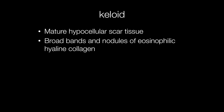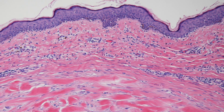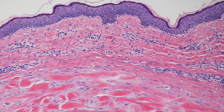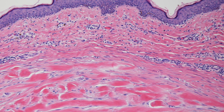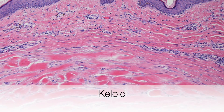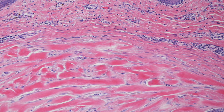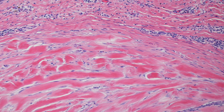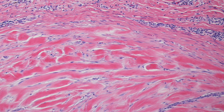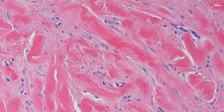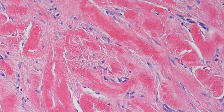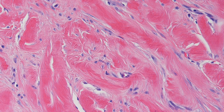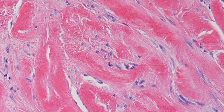Histologically, keloids are composed of mature hypocellular scar tissue arranged in broad bands and nodules of eosinophilic or pink-staining hyalinised collagen. Here is the histological appearance of a keloid that has been surgically removed. The upper dermis just below the epidermis looks pretty normal, but as we drop down deeper into the dermis, you can see parallel bands of thick hyalinised collagen. Here is a higher power view of the broad eosinophilic bands of hyalinised collagen.